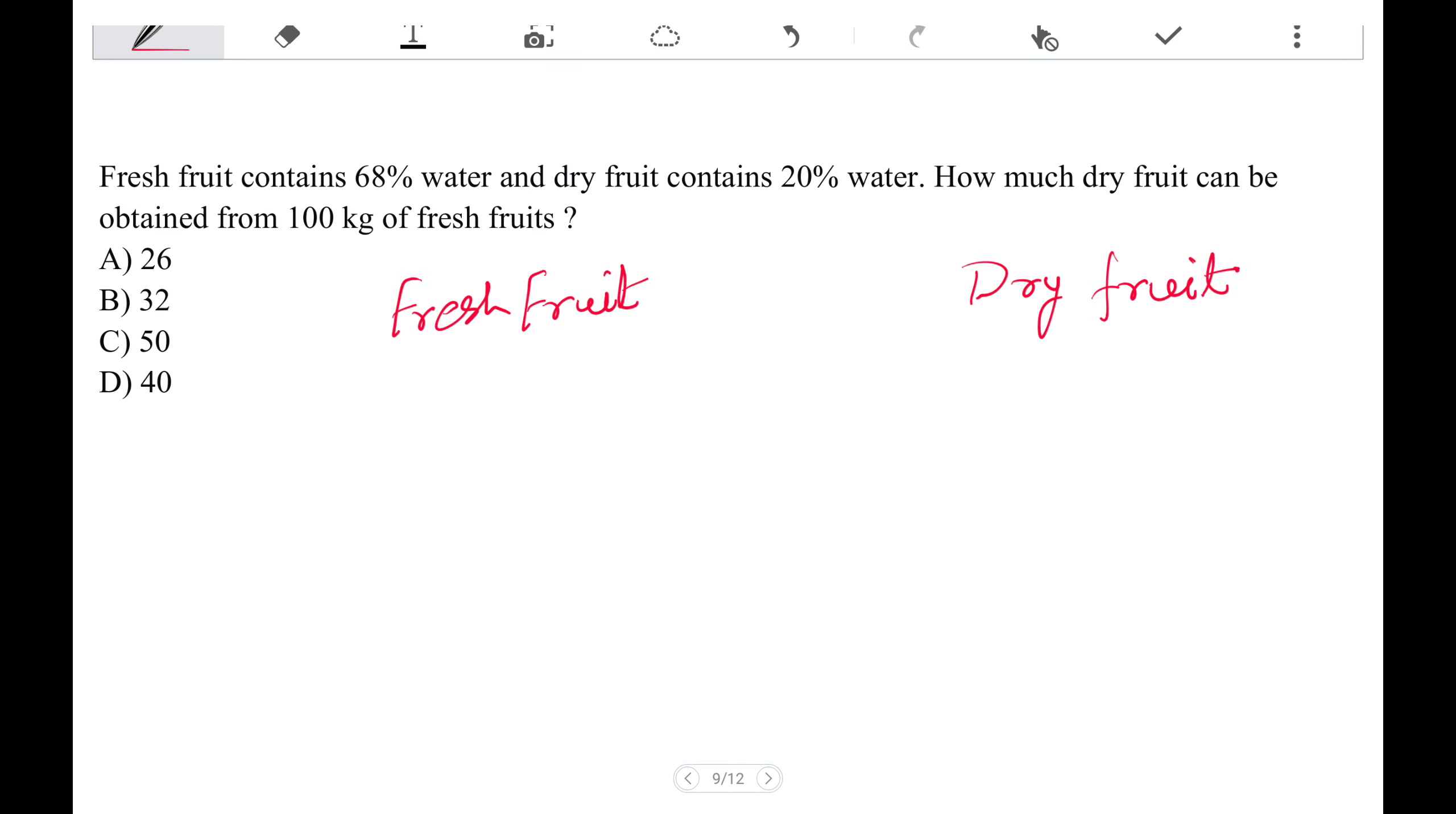Fresh fruit contains 68% water and dry fruit contains 20% water. How much dry fruit can be obtained from 100 kg of fresh fruits? If it is 100 kg of fresh fruit,